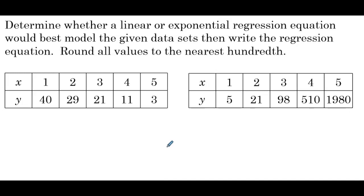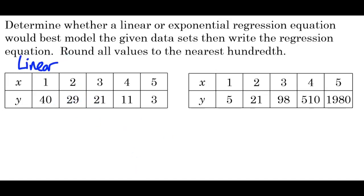Determine whether a linear or exponential regression equation would best model the given data sets, then write the regression equation. Round all values to the nearest hundredth. They've given us two tables and we need to decide if each represents a linear or exponential function. For the first table, the x's go up by 1's and the y differences are about negative 11, negative 8, negative 10, negative 8 — roughly the same, so linear is the best approach.